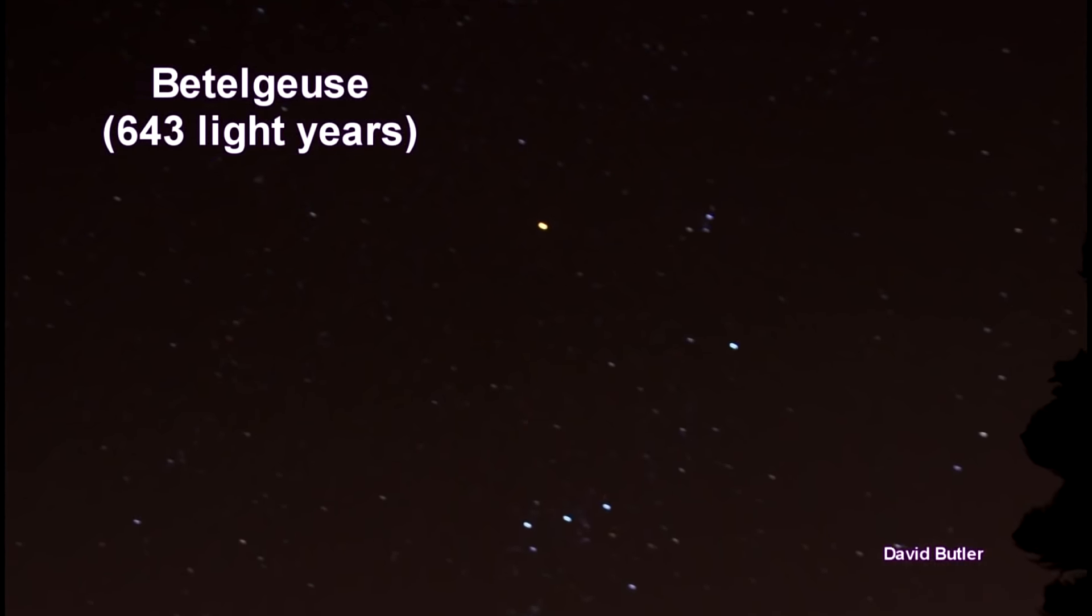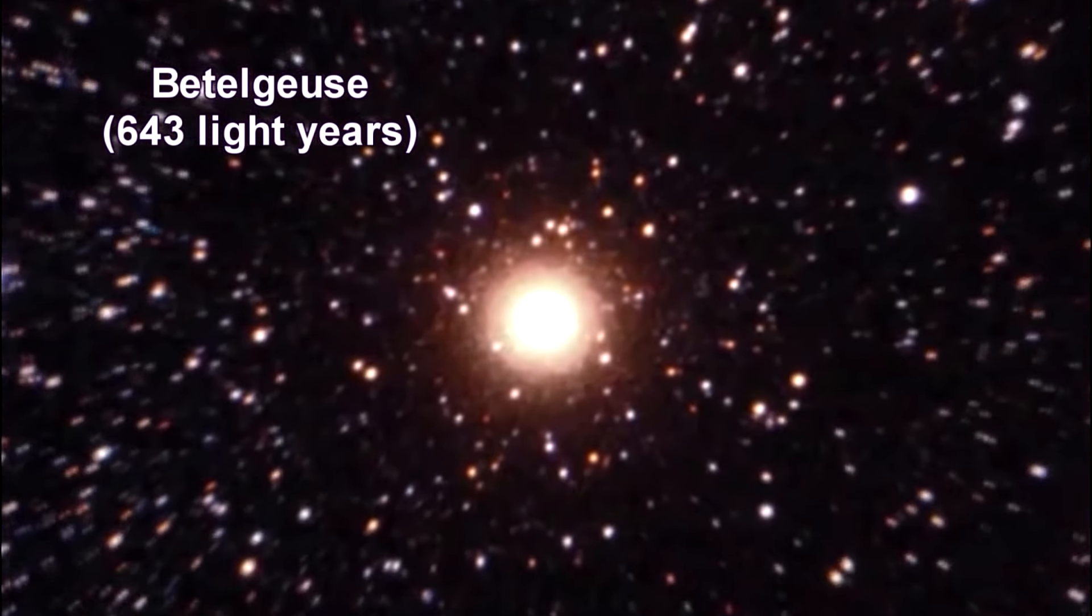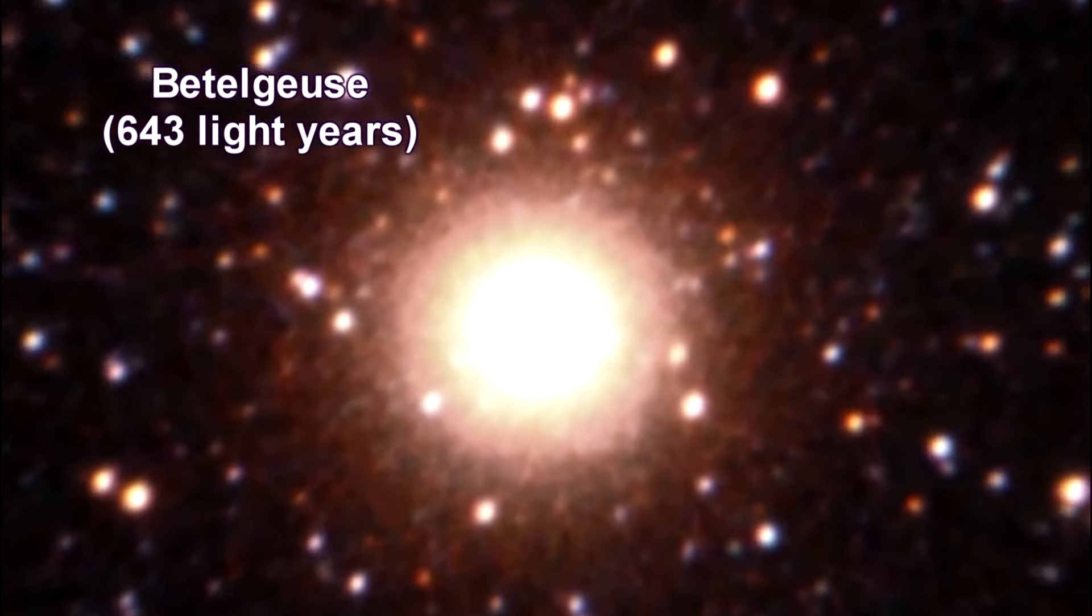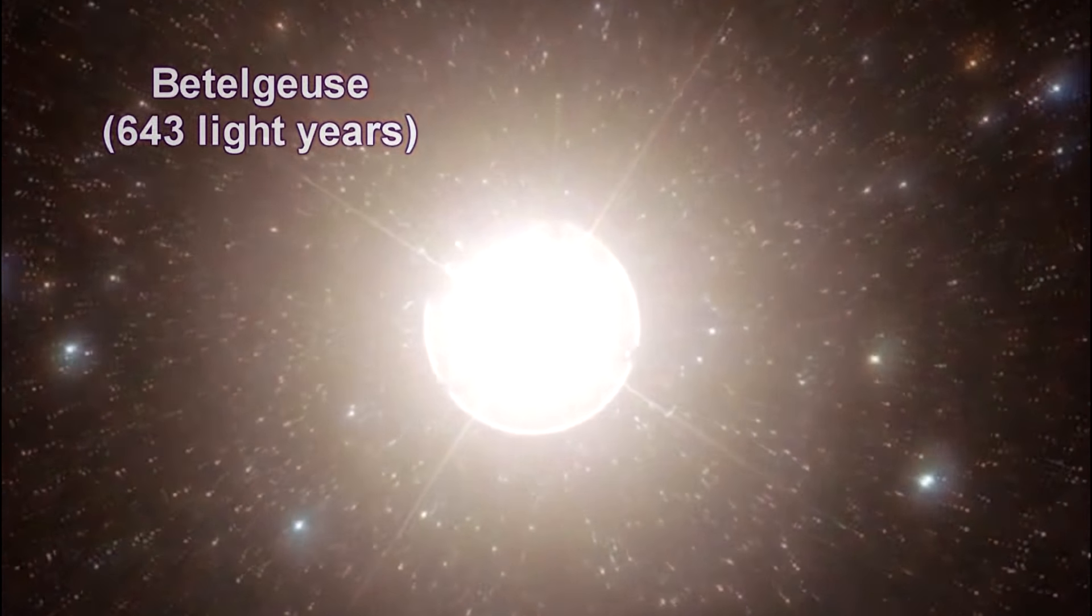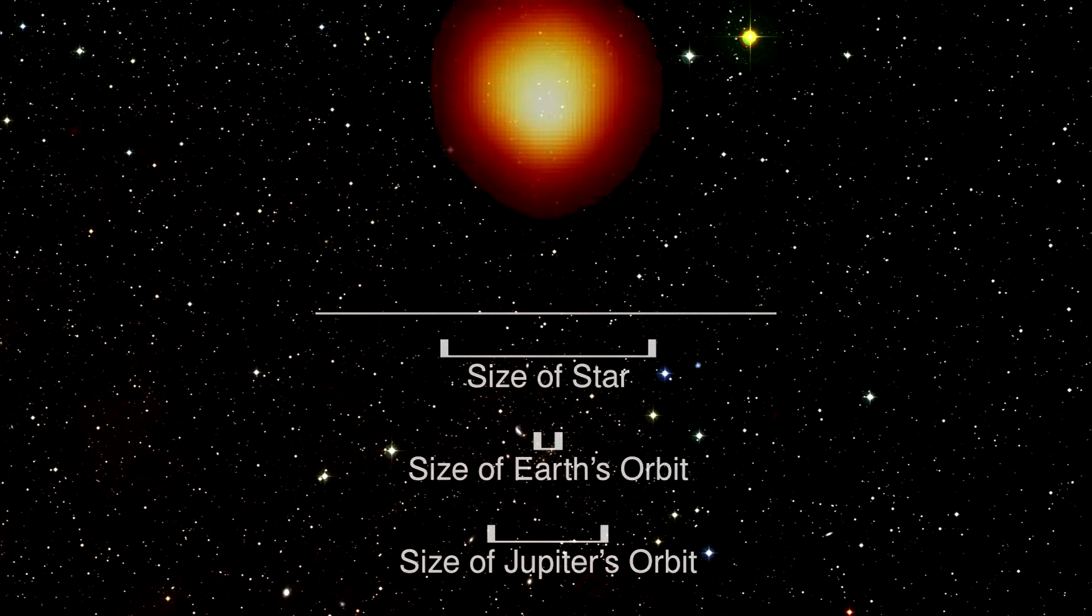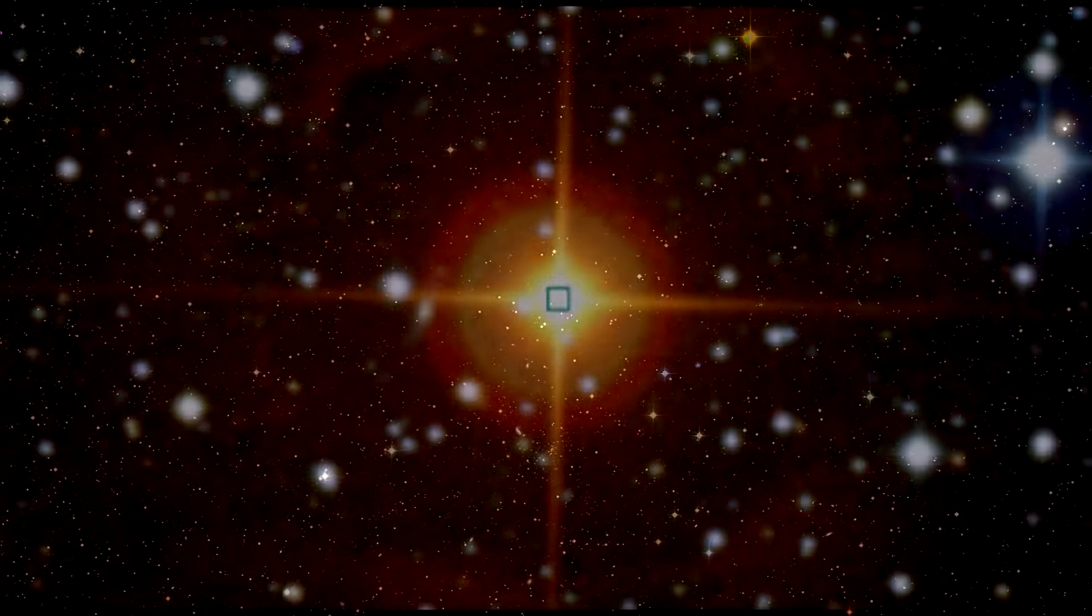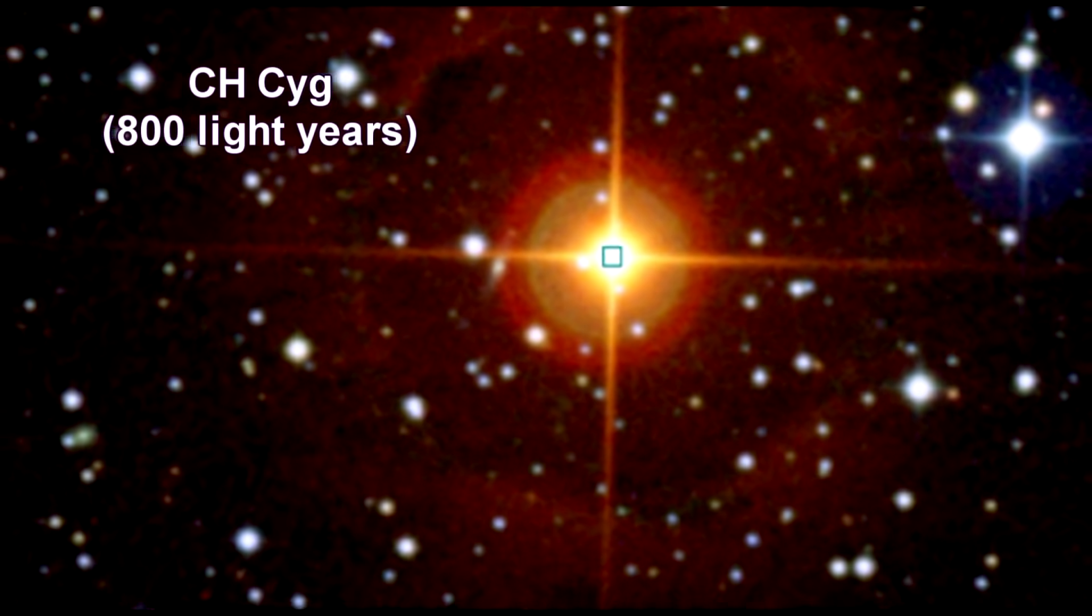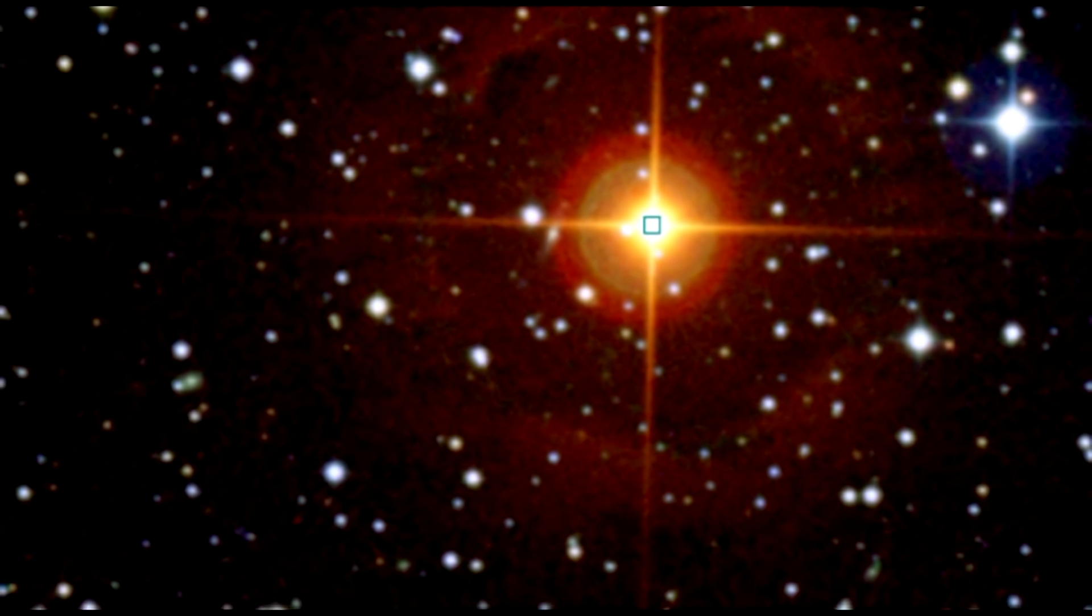Betelgeuse is a very rich, reddish, cool, supergiant carbon star. It is also one of the largest and most luminous stars known. If it were at the center of the solar system, its surface would extend past the orbit of Jupiter. CH CYG is a symbiotic star system, in which a white dwarf feeds from the solar wind of a companion red giant star.